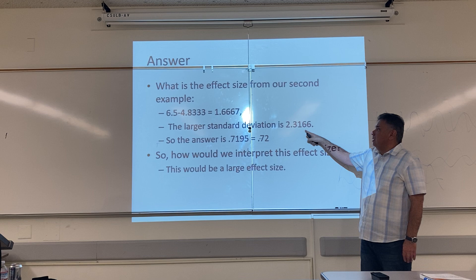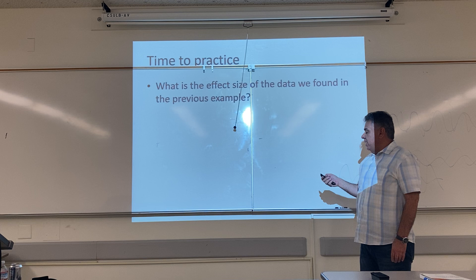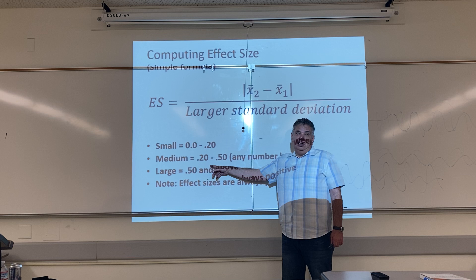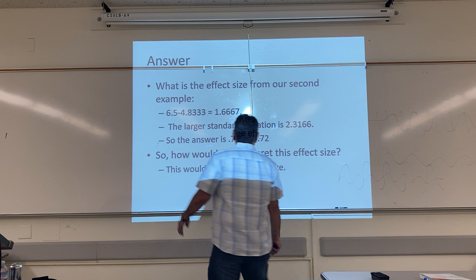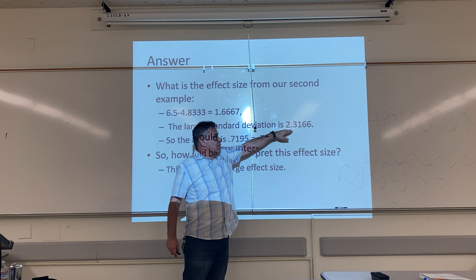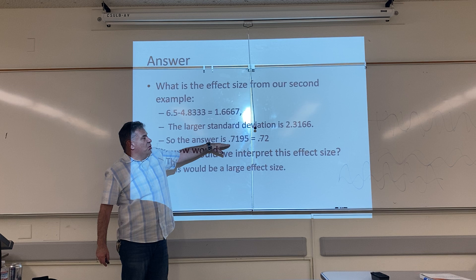Jose, you only have four decimal places. Why? Because we're going to take our answer and compare it against two decimal places. We use four decimal places because we're going to round our final answer to two decimal places. So when we take this numerator and divide it by this standard deviation, our answer to four decimal places is 0.7195, which equals 0.72.